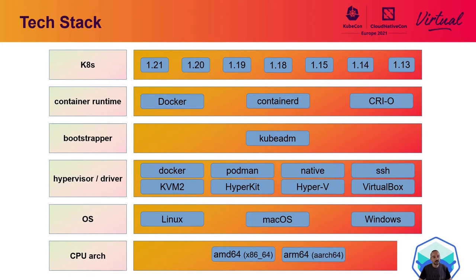Starting from the lowest layers, Minikube runs on AMD64 as well as ARM64 CPU architectures. In terms of operating systems, Linux, macOS, and Windows are supported. It can use a wide variety of hypervisors and drivers like KVM, Hyperkit, Hyper-V, and VirtualBox, then Docker and Podman. You can also use an existing operating system — the native driver allows you to use your local OS, and SSH allows you to use a remote operating system.